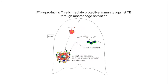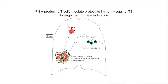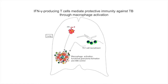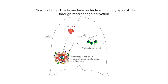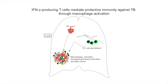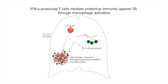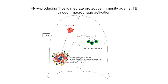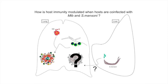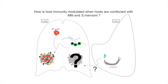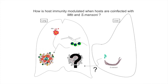We and others have shown that recruitment of T helper cell type 1 cells to the lung to activate lung macrophages is required for protective immunity against tuberculosis. In the current study, we addressed how helminth co-infections modulate immunity against tuberculosis.